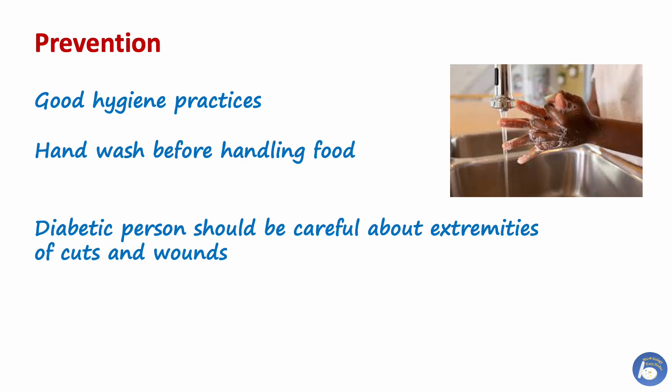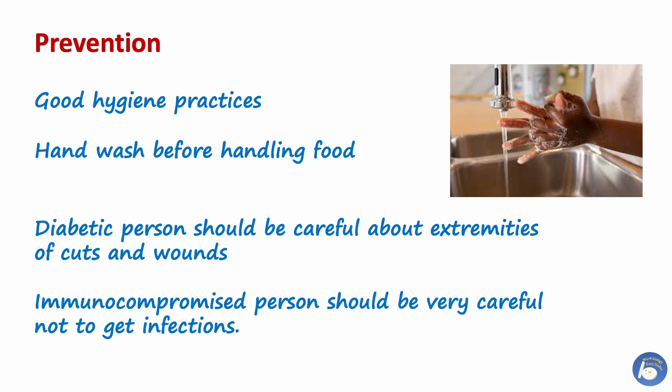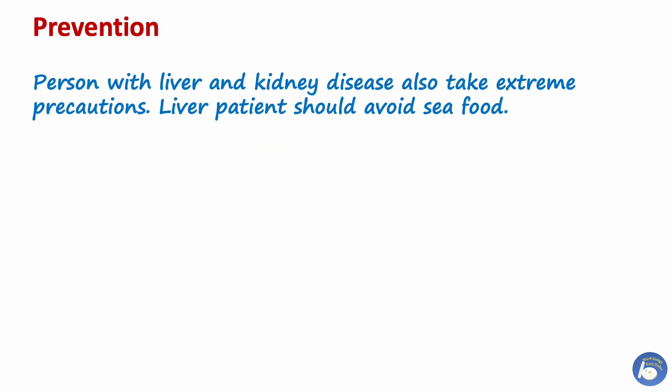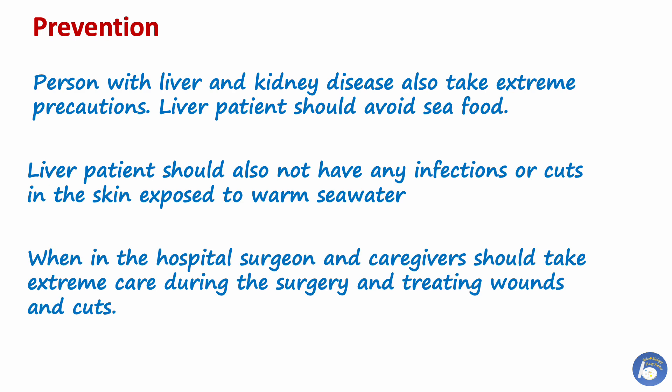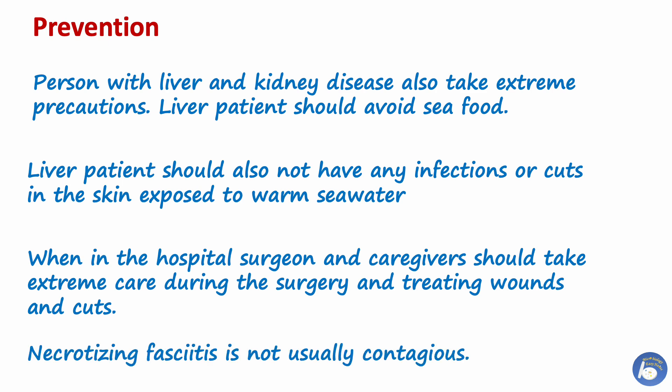Prevention includes good hygiene practices and hand washing before handling food. Diabetic persons should be careful about extremities with cuts and wounds. Immunocompromised persons should be very careful not to get infections. Persons with liver and kidney diseases should take extreme precautions; liver patients should avoid eating seafood due to risk of Vibrio vulnificus infection and should not have cuts in skin exposed to warm sea water. In hospitals, surgeons and caregivers should take extreme care during surgery and when treating wounds. Necrotizing fasciitis is not usually contagious; however, it is possible for uninfected people to come into contact with a patient and become infected with an organism that may eventually cause necrotizing fasciitis.